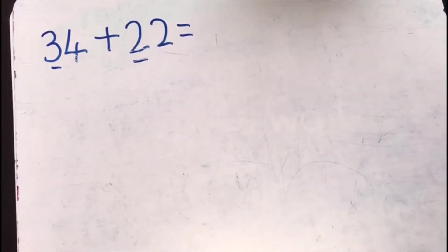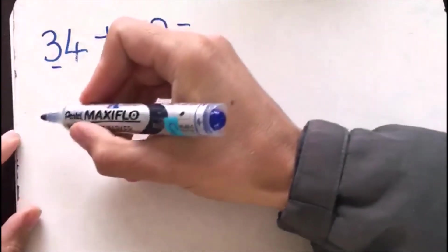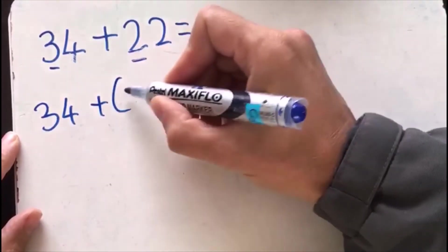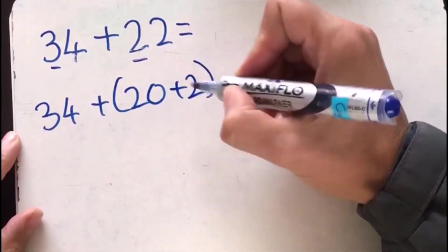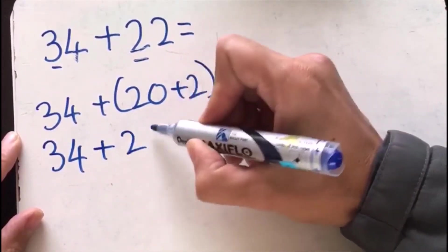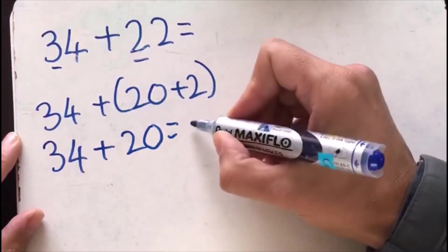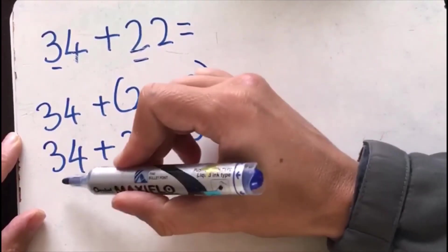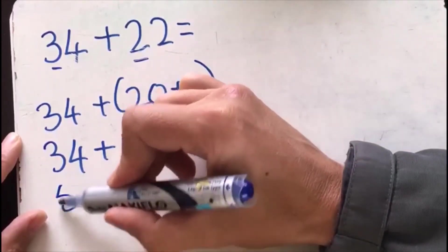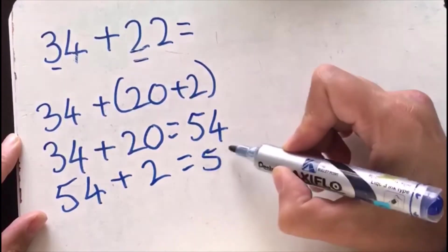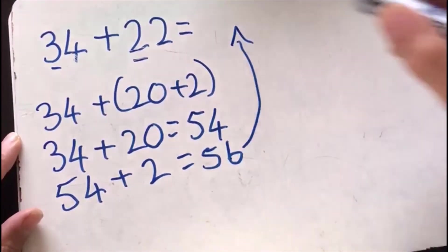The second method is where I only rename one of the numbers. So my 34 remains, and I rename my 22. Then I add the 20 to that, and then I add my units to my answer there, and I hop to the top with my final answer.